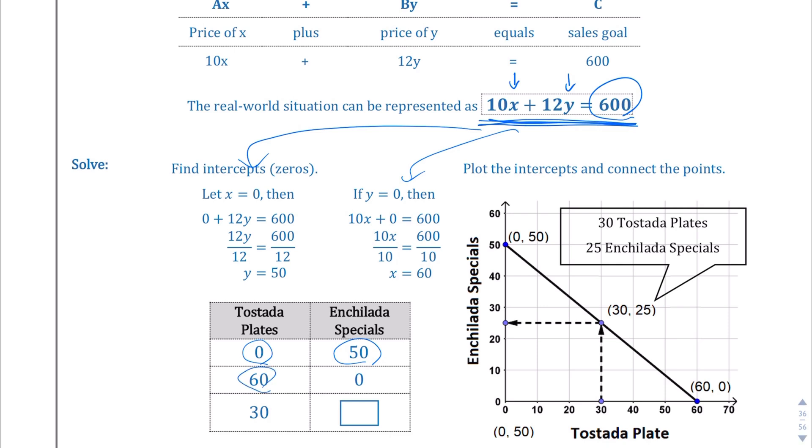If we sell zero enchilada plates, we need 60 tostada plates. So we've got to figure out, if we sell 30 tostada plates, how many enchilada plates do we need to sell? Well, the graph helps us figure that out. At 30, we can see that we need 25 enchilada specials, in order for us to sell $600 worth of food. So that's what's going on there if you're wondering how that works.